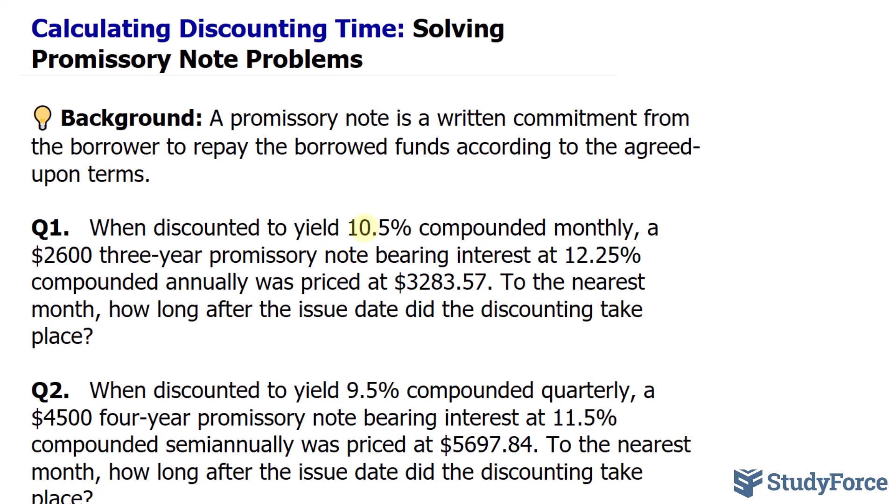To figure this problem out, we first need to find out how much the $2,600 matured to in three years. Then, once we've found that number, we discount it by 10.5% such that it amounts to $3,283.57. Let's begin by doing the first thing, which is to find out how much the $2,600 amounted to after three years.